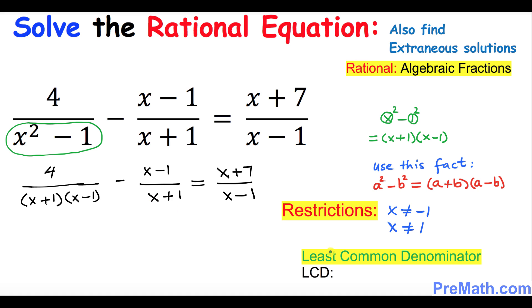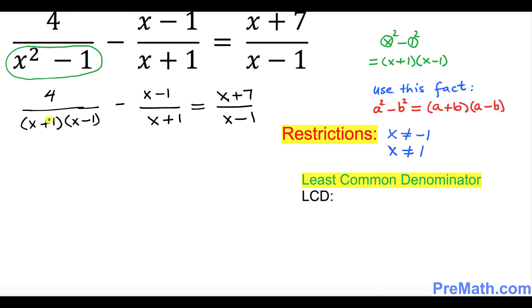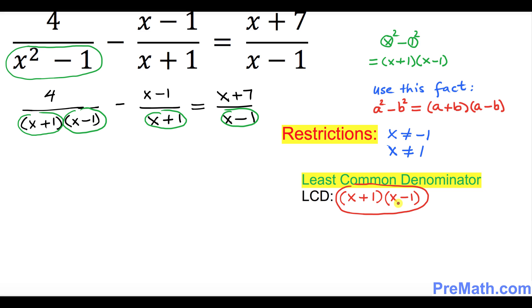In the next step we are going to find the least common denominator, or LCD, for these fractions. Looking at the denominators, we have (x+1) and (x-1) as factors. The least common denominator for all terms turns out to be simply (x+1) times (x-1).